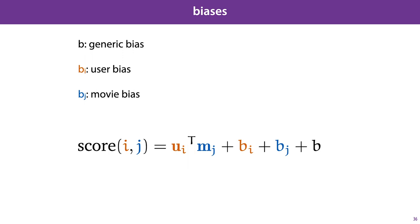We model biases by a simple additive scalar, which is learned along with the embeddings. We learn one scalar for each user, one scalar for each movie, and one general bias over all ratings. We can think of these parameters as taking some of the weight off the embeddings. If user i is very positive and we don't include a bias term, then we'd need to set their embeddings so that it's positive for all movies. With the bias term, the dot product just needs to model the distance to the user's average rating.